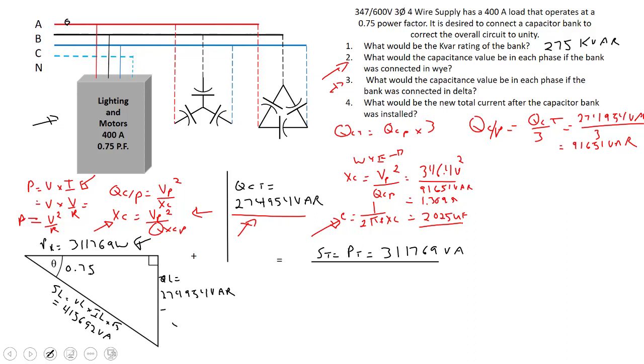Now if I were to do this in delta and figure out what size each capacitor would have to be, I'm going to do the exact same step. The only difference is my phase voltage is now different. XC in delta would be V phase squared divided by QXC in the phase. Now our phase voltage is the same as line voltage, 600 volt squared divided by our 91,651 VAR. That's about 3.928 ohms of capacitive reactance.